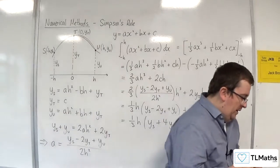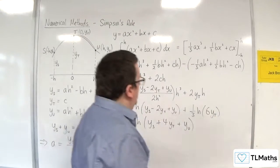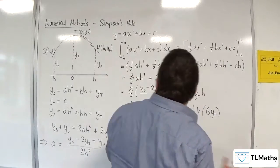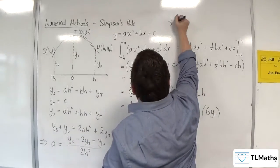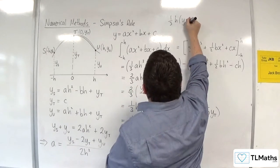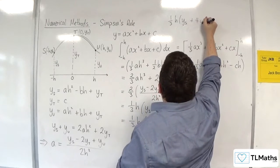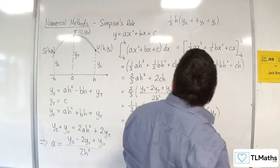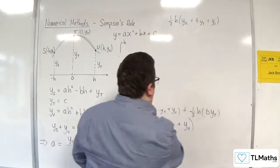Because we're saying that this first parabola can be formed, and we can work out the value of it, by having one third times the width of the strip, times by the heights ys, 4 lots of the middle one, plus yu. So, what we're going to do is we're now going to take note of that. So one third h ys plus 4yt plus yu.